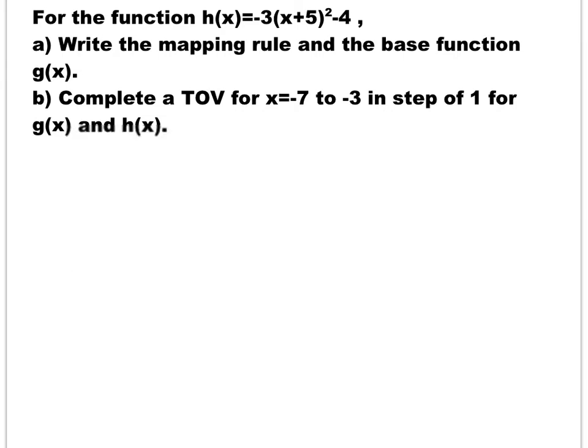In the first example, we have the function h of x is equal to negative 3 times x plus 5 squared minus 4. You're supposed to write the base function and the mapping rule. As you can see, the base function is easily identified — it's a quadratic, so the base function, let's call it f of x, is x squared.